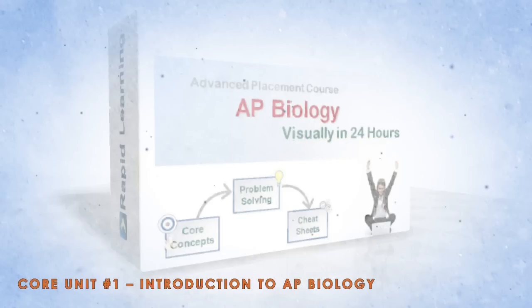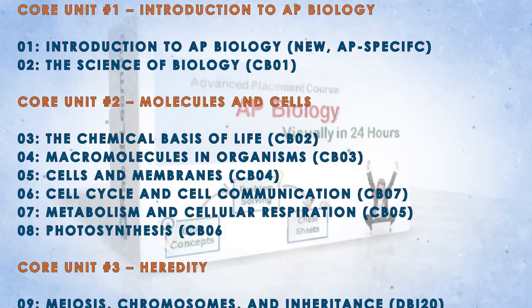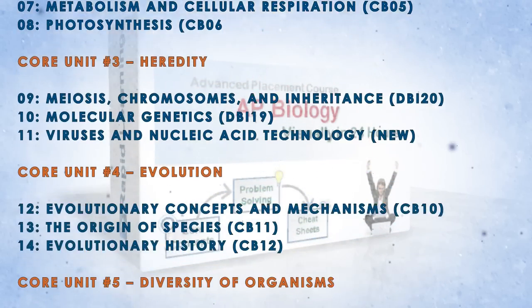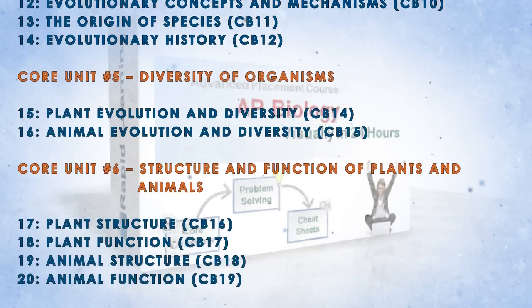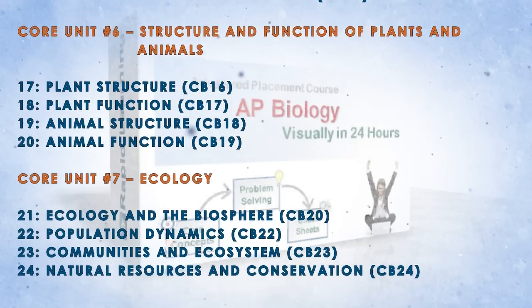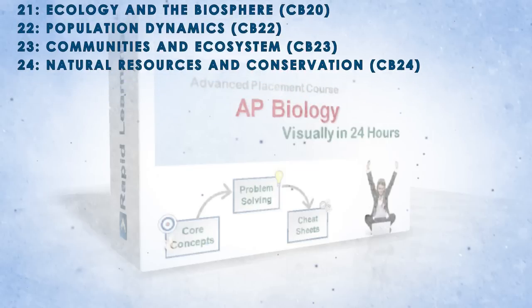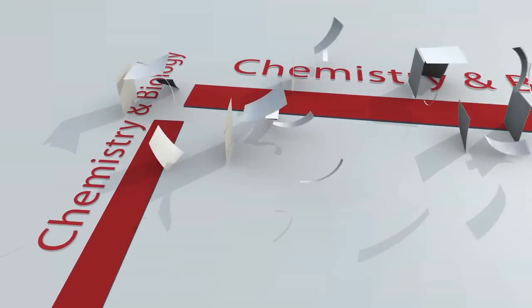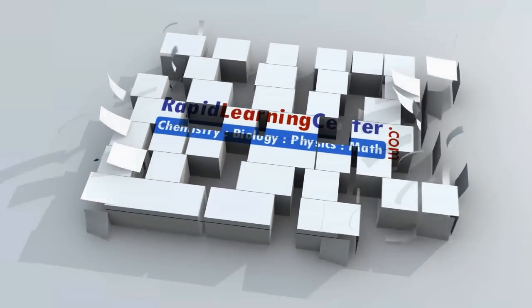The topics include: introduction to AP Biology, molecules and cells, heredity, evolution, diversity of organisms, structures and functions of plants and animals, and ecology. Master AP Biology the rapid learning way.